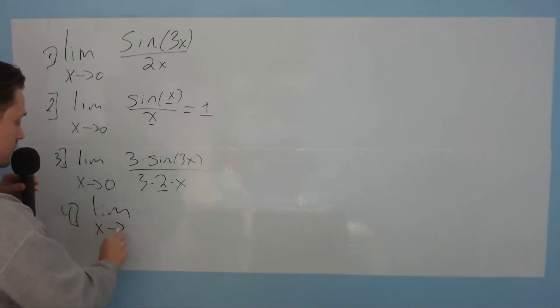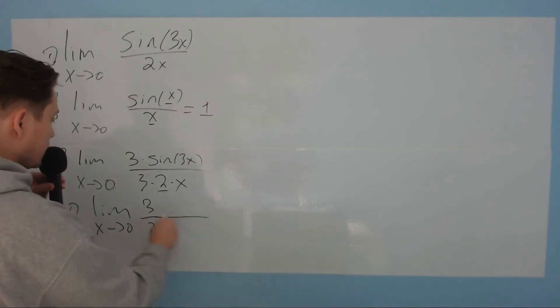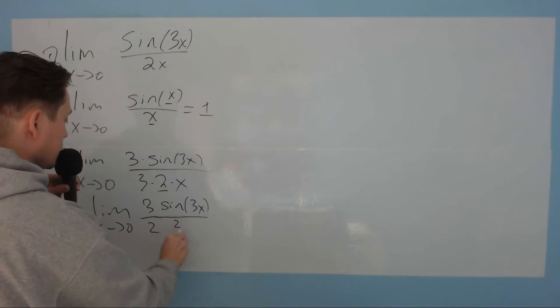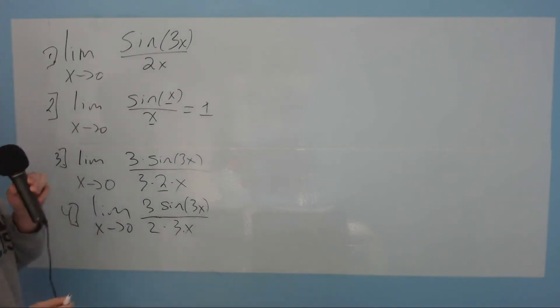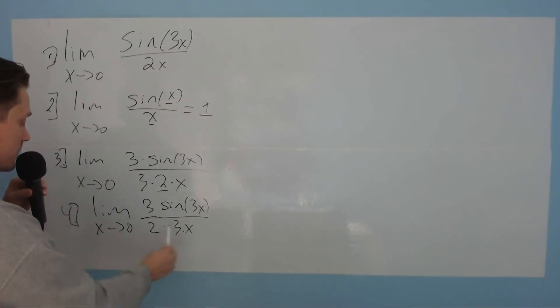Limit as x approaches 0 becomes the following. There's a 3 in the top, and that 2 goes outside. So it becomes 3 halves. Then what's left is the sine of 3x over 3x. So on the bottom, instead of writing 3 times 2 times x, I'm writing 2 times 3 times x. That's okay. Remember, 5 times 4 times 10 is the same as 10 times 4 times 5, and so on. It doesn't matter how you multiply, so you can rearrange the numbers.